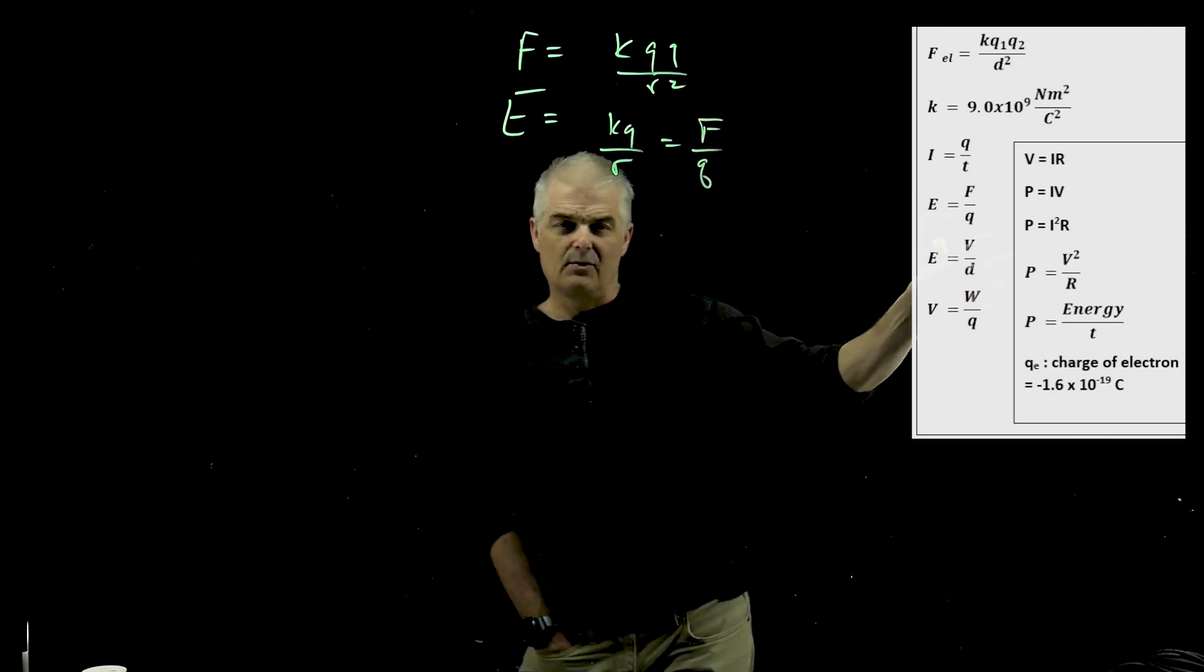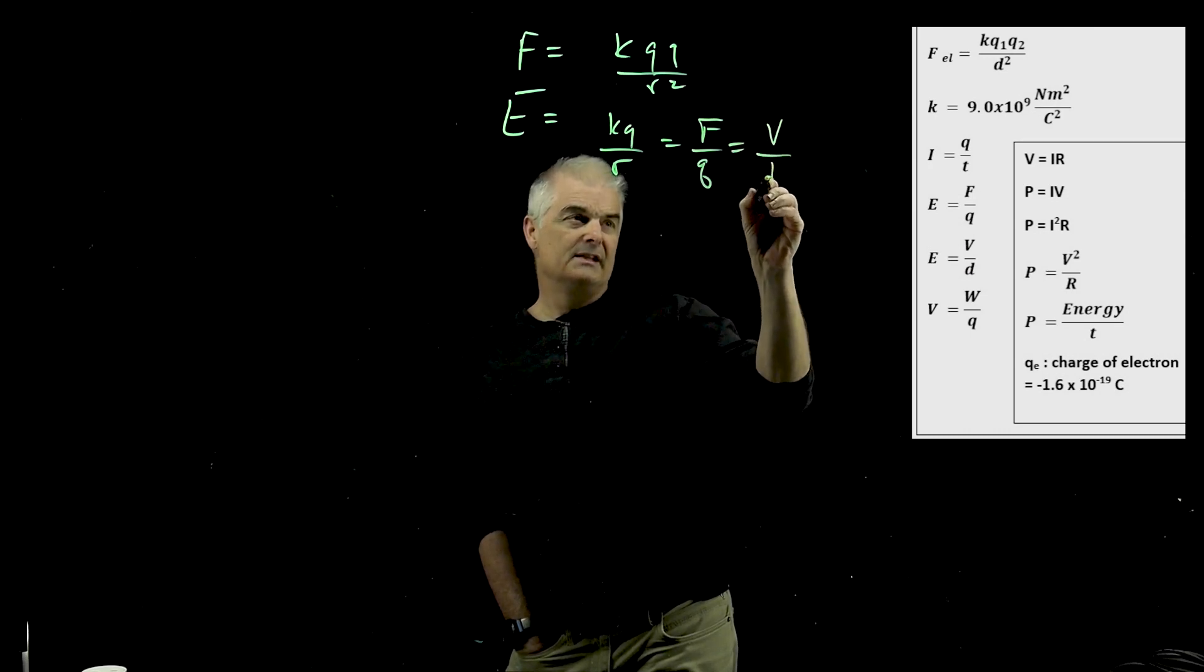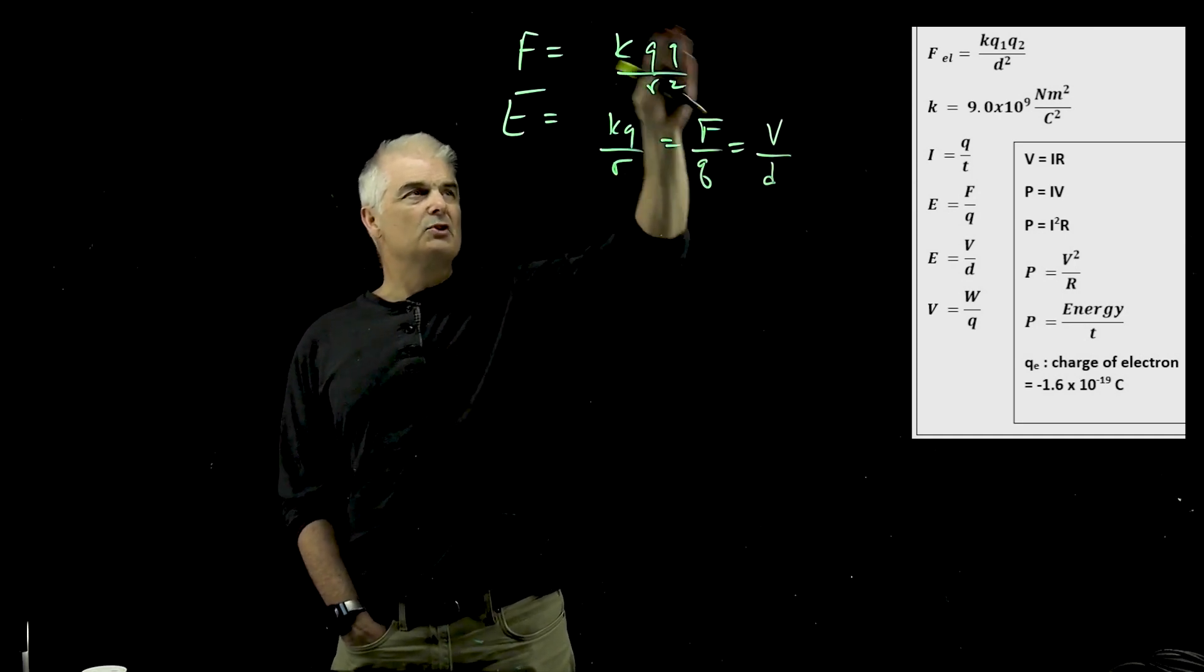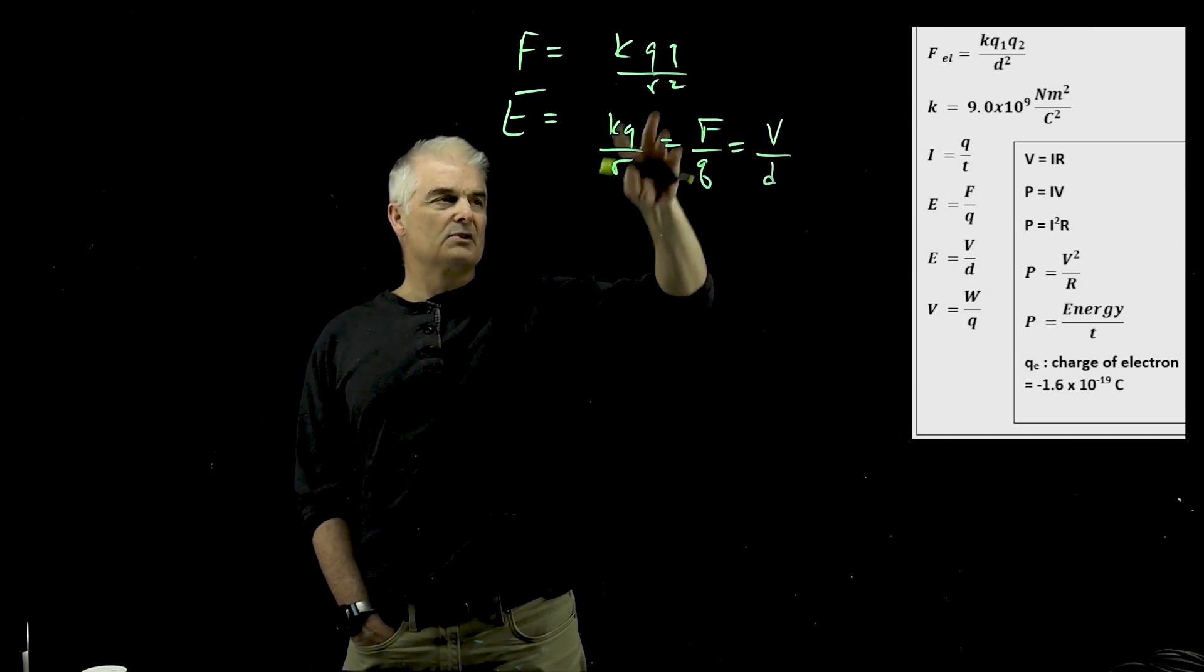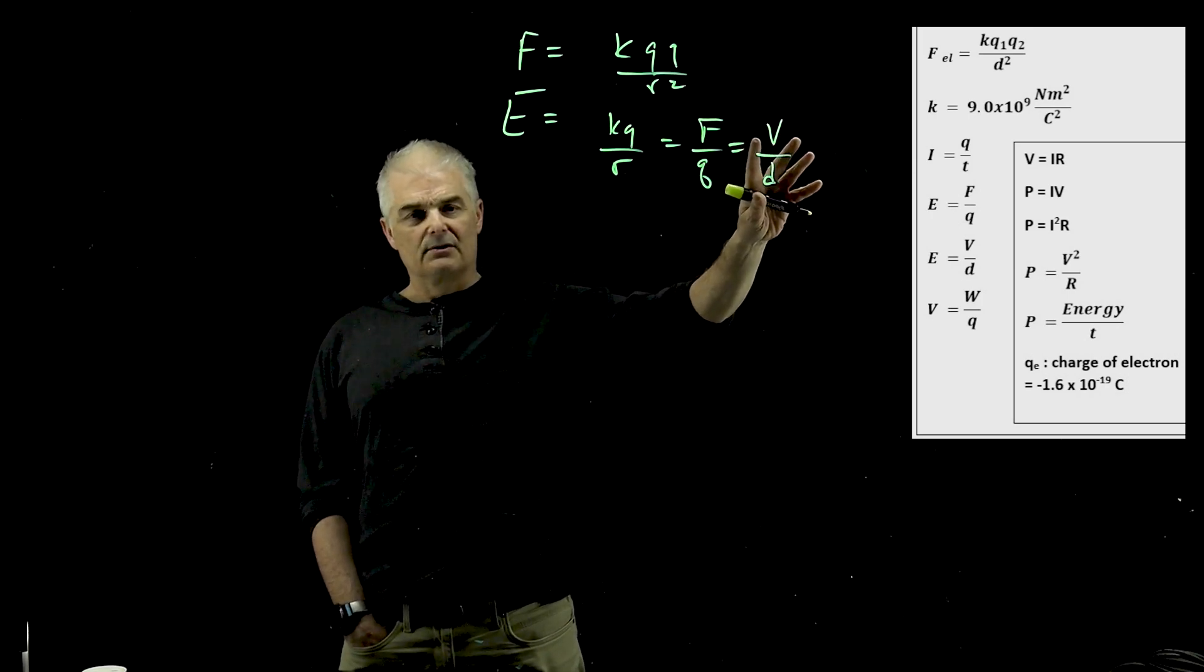But you could also just say it's equal to F over Q. All right, so there's more, you can see that equation over here. It's also equal to V over D. So the electric field, there's lots of ways. Long story, I'm not going to go into the details, but you can manipulate basically Coulomb's law in different ways and get all these things out of it.